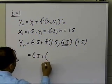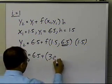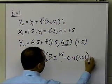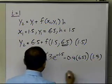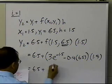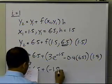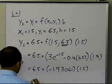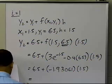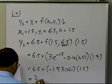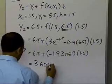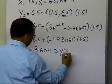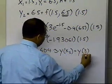So y2 equals 6.5 plus the function value at (1.5, 6.5) times 1.5. The function is 3e to the power minus 1.5 minus 0.4 times 6.5, which turns out to be minus 1.93061. So y2 equals 6.5 plus minus 1.93061 times 1.5, which equals 3.604. That is the approximate value of y at x2, which is x equals 3.